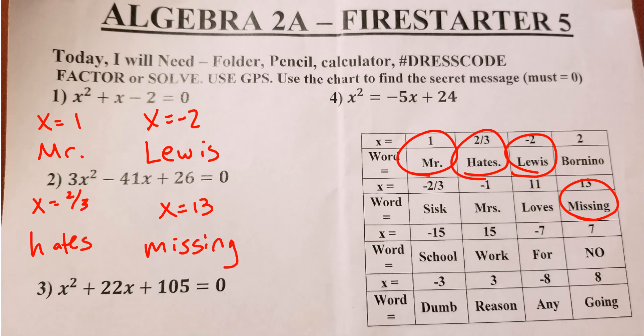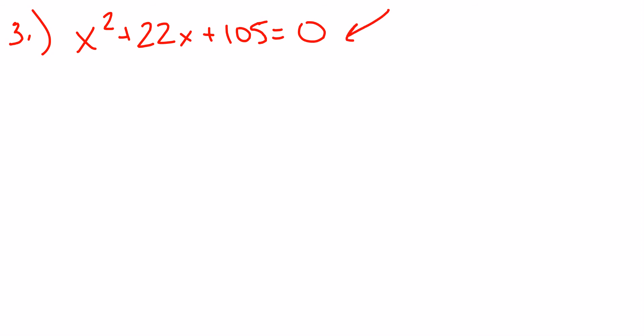All right, so that's it. Now I'm going to go to number 3. So once again, it already equals 0. So I'm immediately going to go into my factoring. So I have x and x. How do I get 105? Well, I have 1 and 105. 2 doesn't work. 3 doesn't work. 4 doesn't work. 5 works. 5 and 21. 6 doesn't work. 7 and 15. Now I'm going to stop right there because 7 and 15 is 22. So I know this is going to be x + 7 and x + 15 is my factored form.